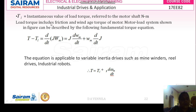TL is the instantaneous value of load torque referred to the motor shaft. Generally, the load torque includes friction torque as well as windage torque of the motor. The load torque always includes friction torque and windage torque of the motor.